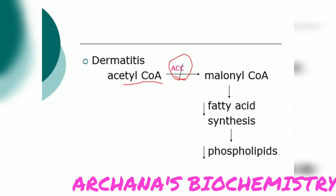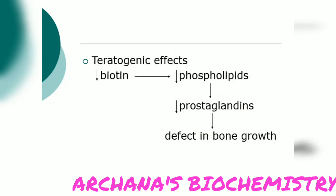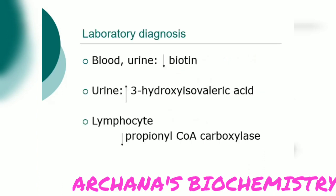The cause of dermatitis: acetyl-CoA carboxylase is a biotin-dependent enzyme that converts acetyl-CoA to malonyl-CoA. When biotin is deficient, fatty acid synthesis is reduced. Without fatty acids, phospholipids are not formed. Since phospholipids are required to maintain skin texture, their deficiency leads to inflammation and irritation of the skin — dermatitis. Regarding teratogenic effects: biotin deficiency leads to decreased phospholipid formation, decreased prostaglandin synthesis, and defects in bone growth.